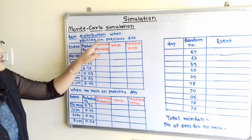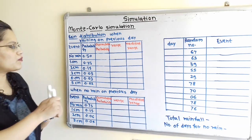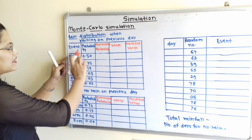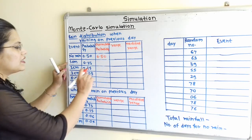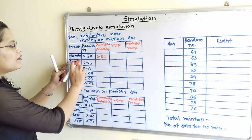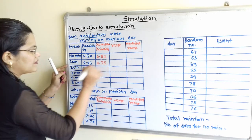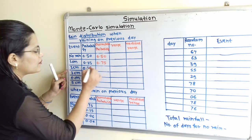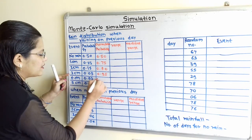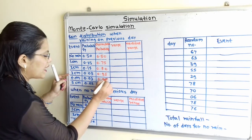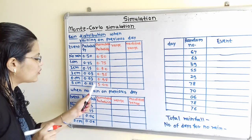We will move to the first condition: when raining on previous day. For that, we have to first find out the cumulative probability. When raining on previous day, the possibility of no rain is 0.50, so we write 0.50 as it is. For the second row, the probability of 1 cm rain is 0.25, so cumulative probability is 0.50 plus 0.25, that is 0.75. Then 0.75 plus 0.15 equals 0.90, then 0.90 plus 0.05 equals 0.95, then 0.95 plus 0.03 equals 0.98, and 0.98 plus 0.02 equals 1. The last number should be 1 or 100.